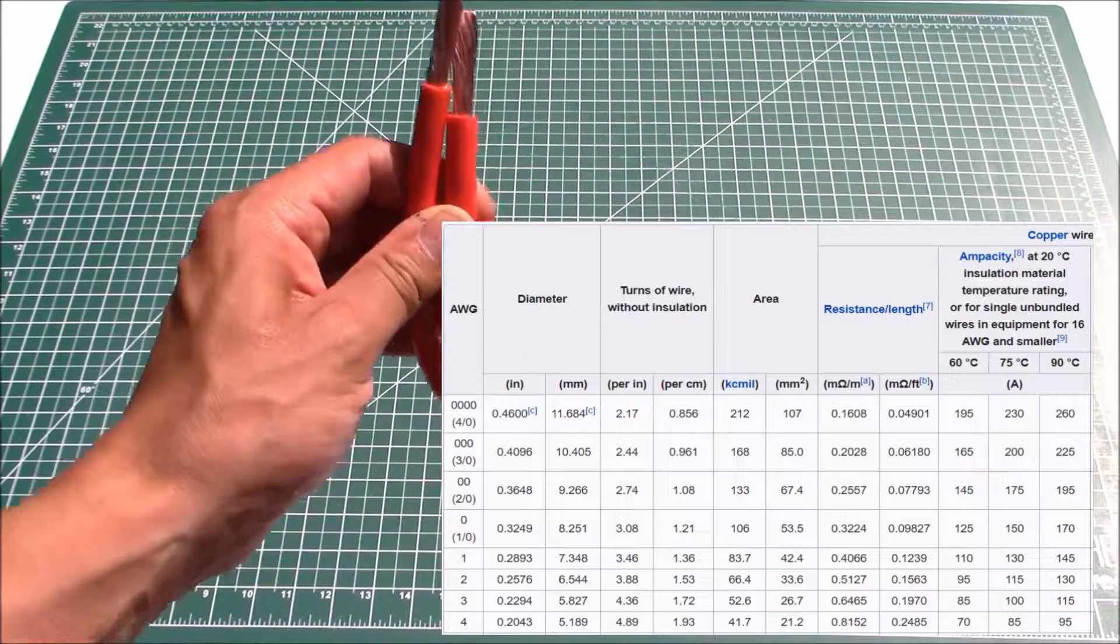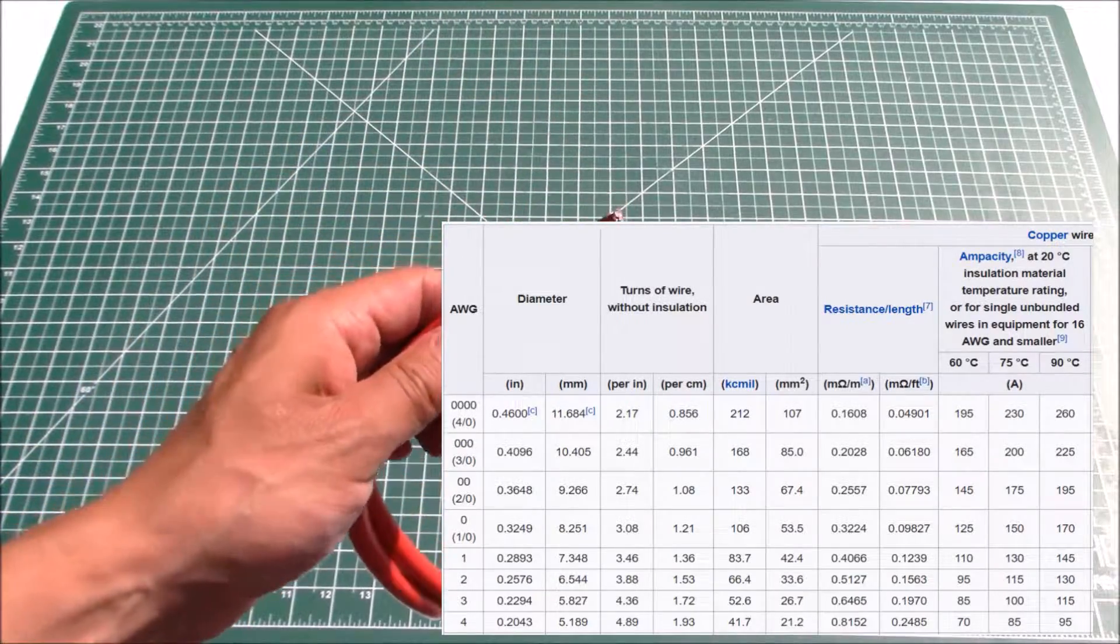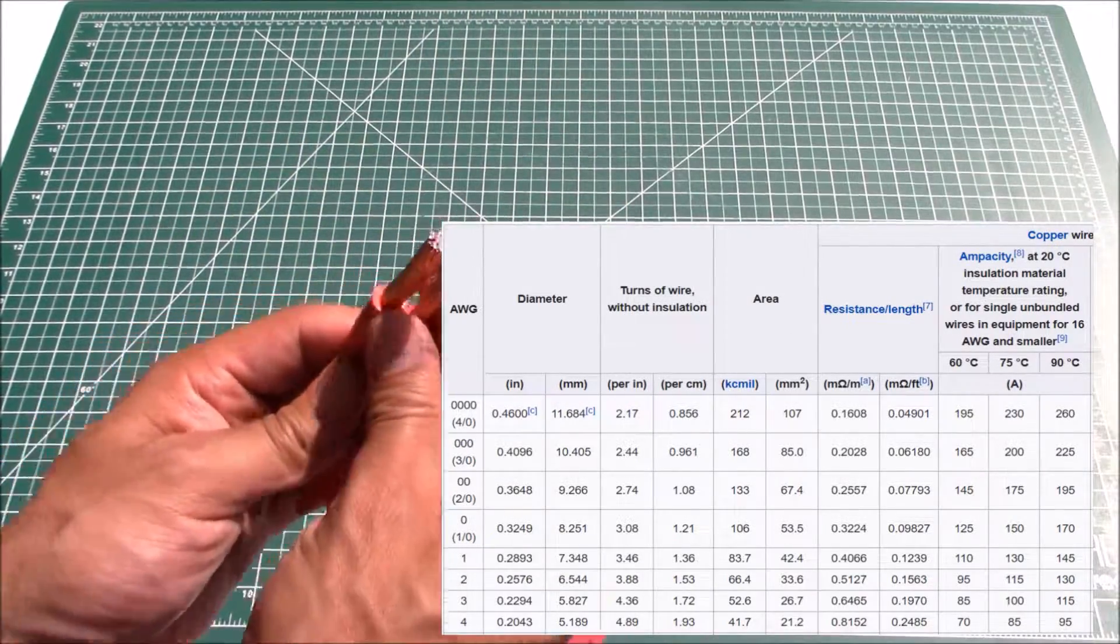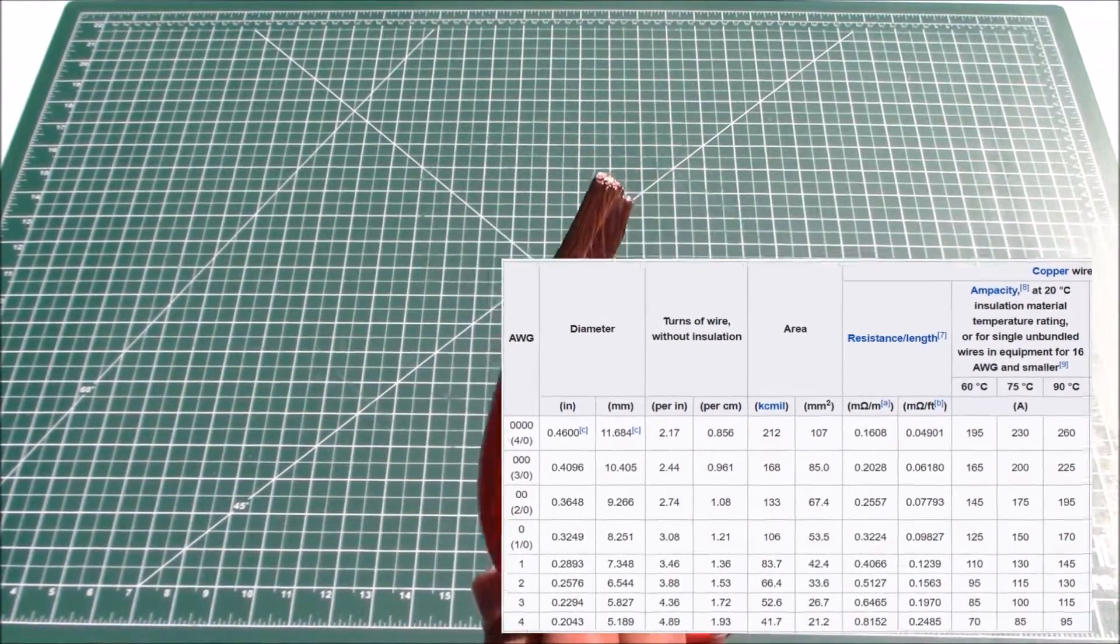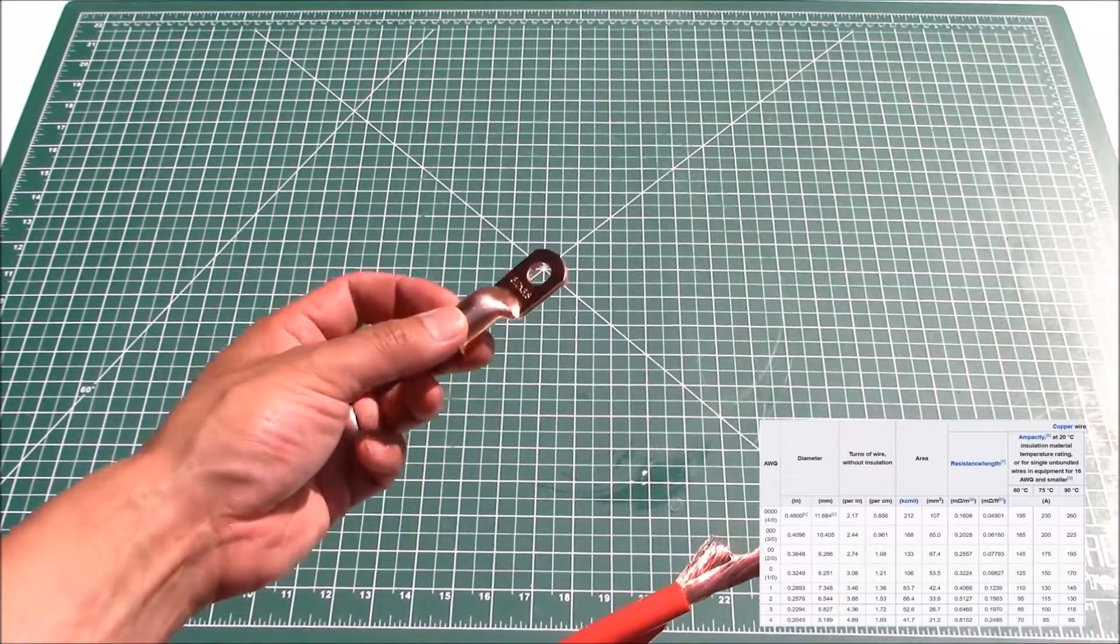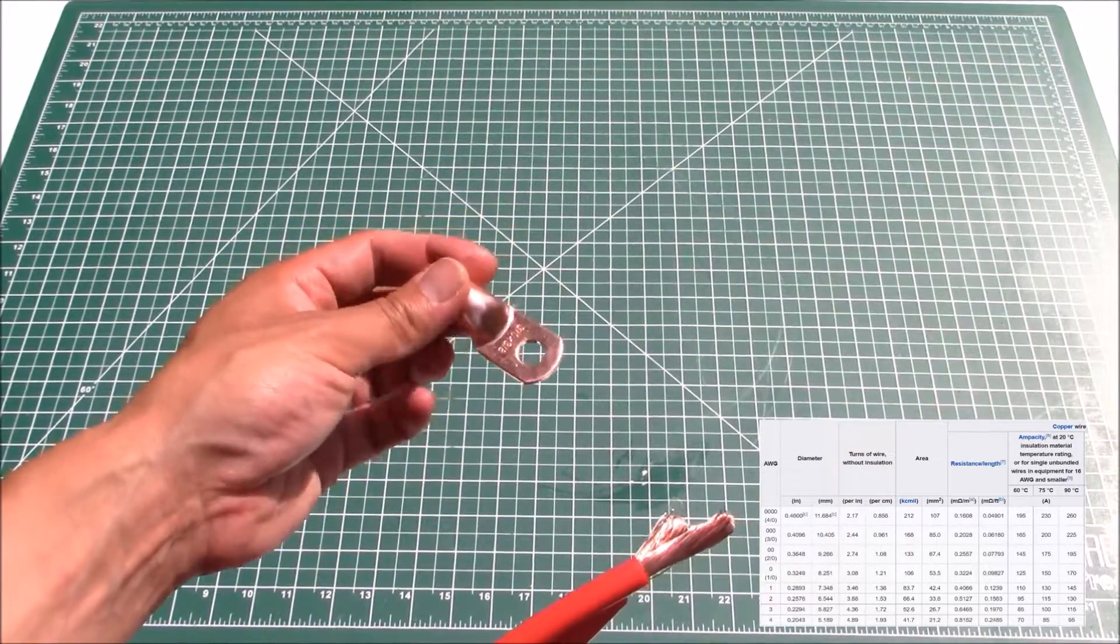This wire should theoretically be able to do about 130 amps. Now that we know this is about the cross-sectional area of a one gauge wire, you're going to want to go get yourself a bare lug or a terminal which is appropriately sized.